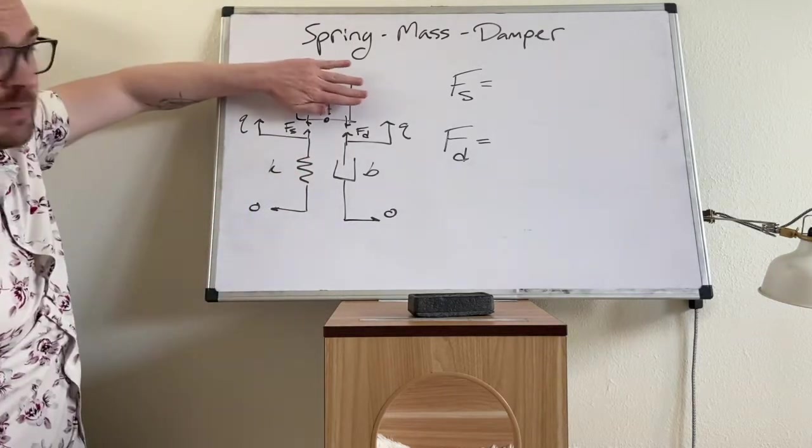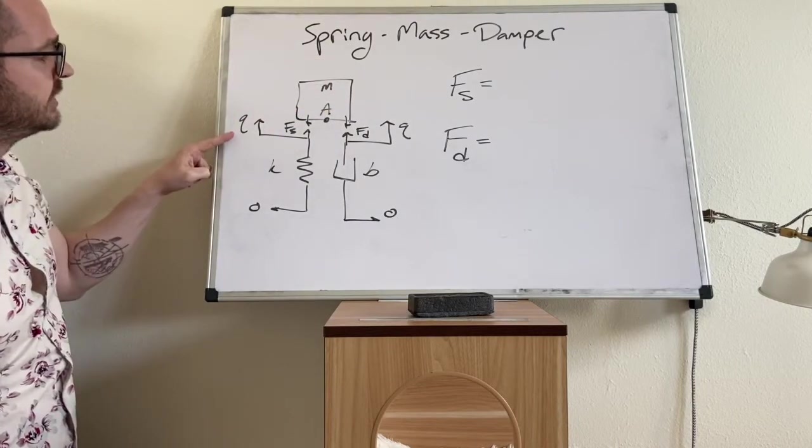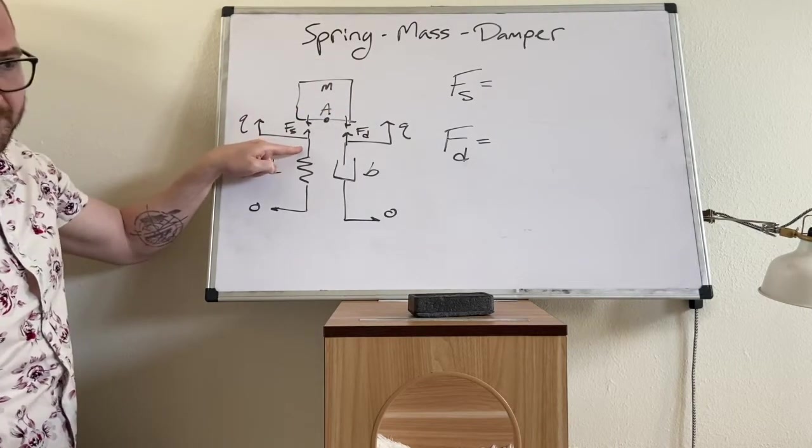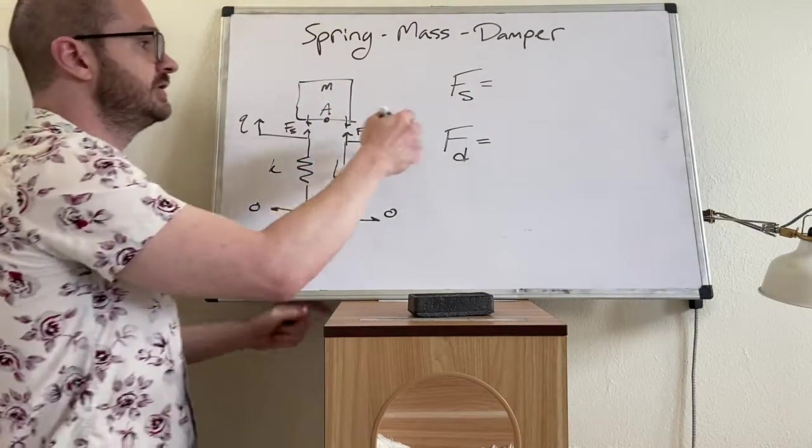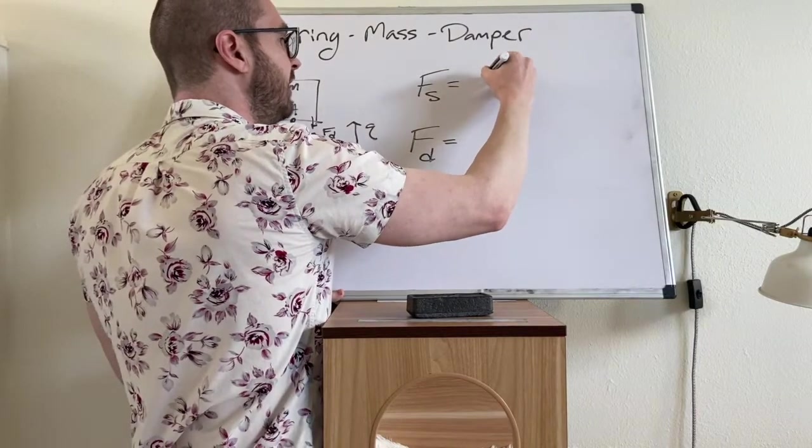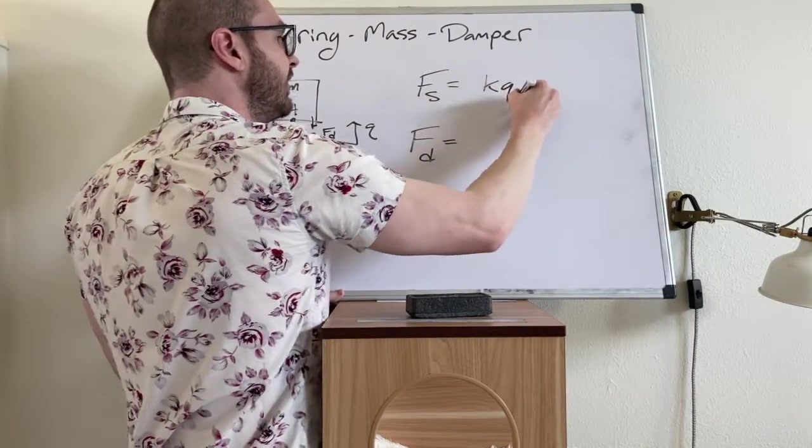If you imagine covering the block up, we have a positive relationship between q and fs on the diagram of the spring. That means the relationship between f and s is positive k times q.